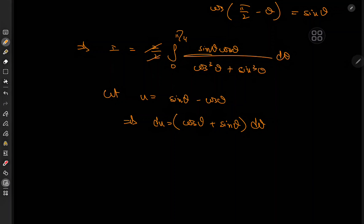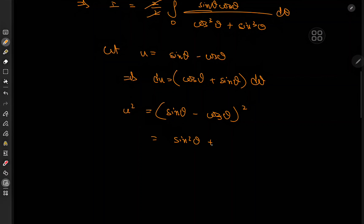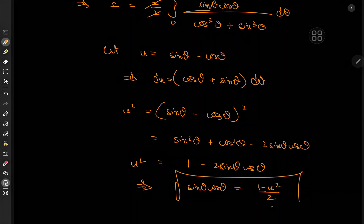We need a sinθ·cosθ term, which is a cross term. We can obtain it by squaring u: u² = (sinθ − cosθ)² = sin²θ + cos²θ − 2sinθcosθ = 1 − 2sinθcosθ. This implies that sinθ·cosθ = (1 − u²)/2 — that's the first key result of our transformation.